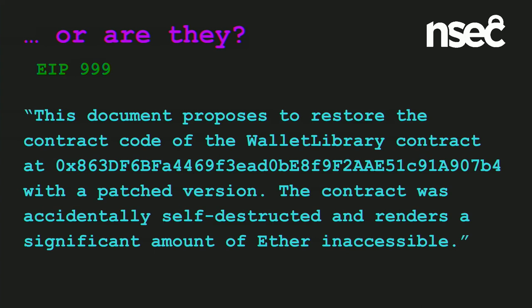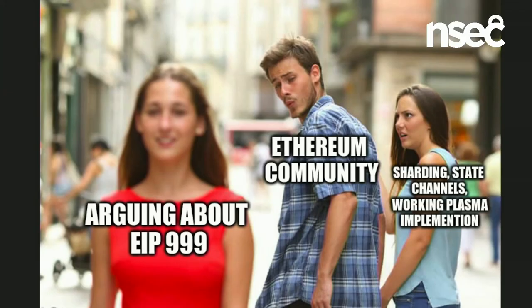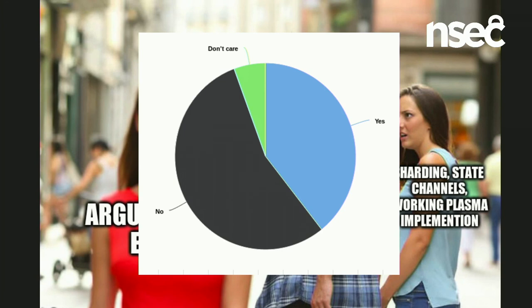Or are the funds frozen? An EIP — Ethereum Improvement Proposal — was recently put forth by the Parity devs to restore the contract code of the wallet library contract with a patched version. The contract was accidentally self-destructed and renders a significant amount of ether inaccessible. No one really knows what to do about this yet — the debate rages. People have been worrying about the possibility of another contentious hard fork. A recent unofficial poll on Etherchain tipped towards 'no' — don't execute EIP 999. The future here is still somewhat uncertain and it's an ongoing debate.